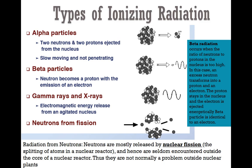What is an alpha particle? An alpha particle essentially has two neutrons — the black ones — and two protons — the white ones — that is ejected from the nucleus. As a result, the radioactive isotope ejecting an alpha particle will have these four particles less from its nucleus and will be lighter. It is slow-moving and non-penetrating because it is pretty heavy with respect to particles.